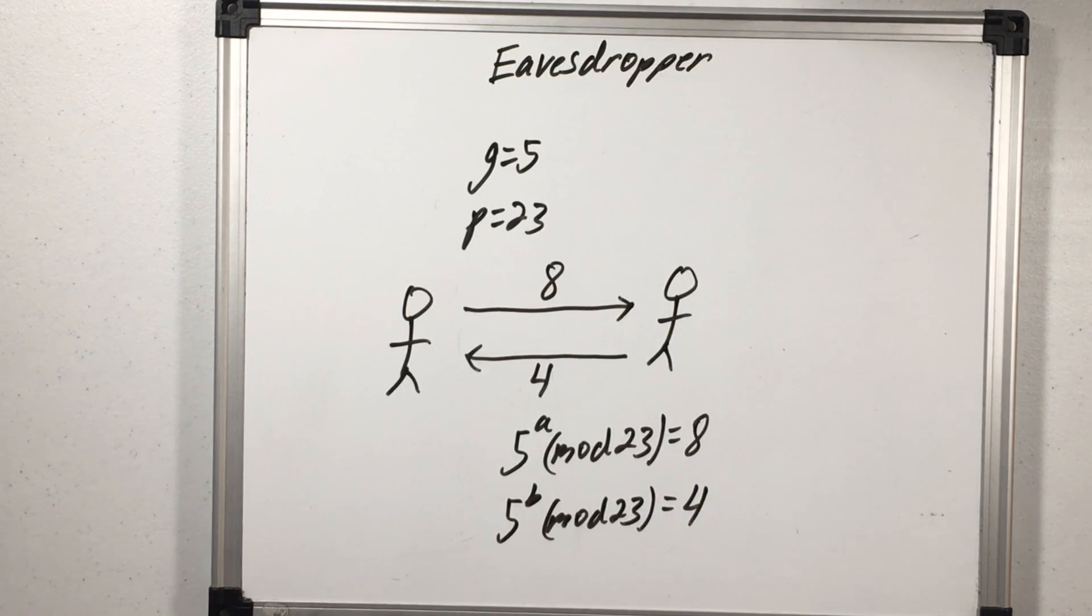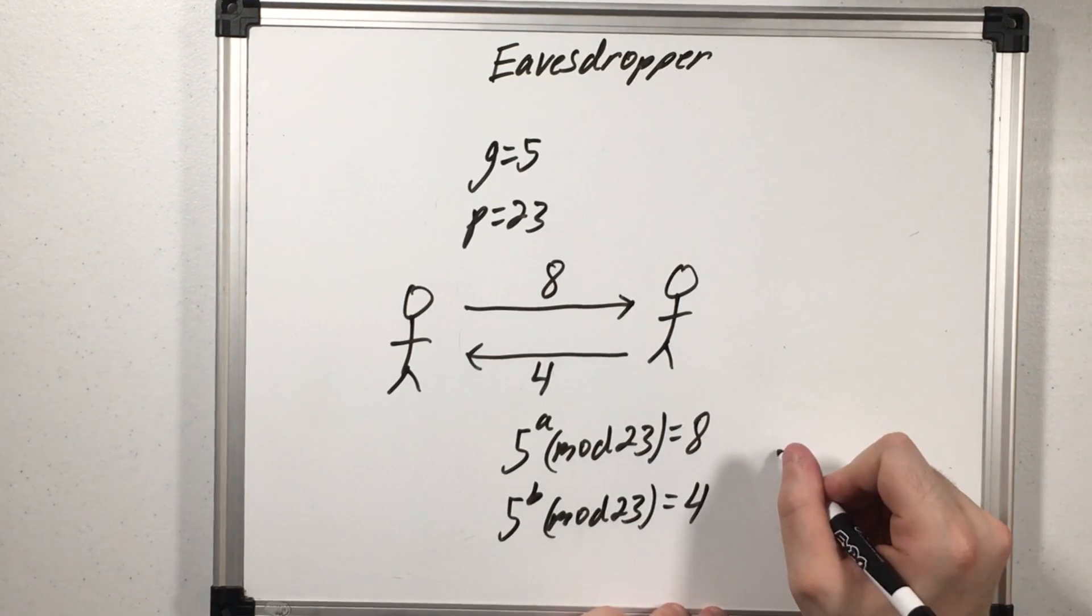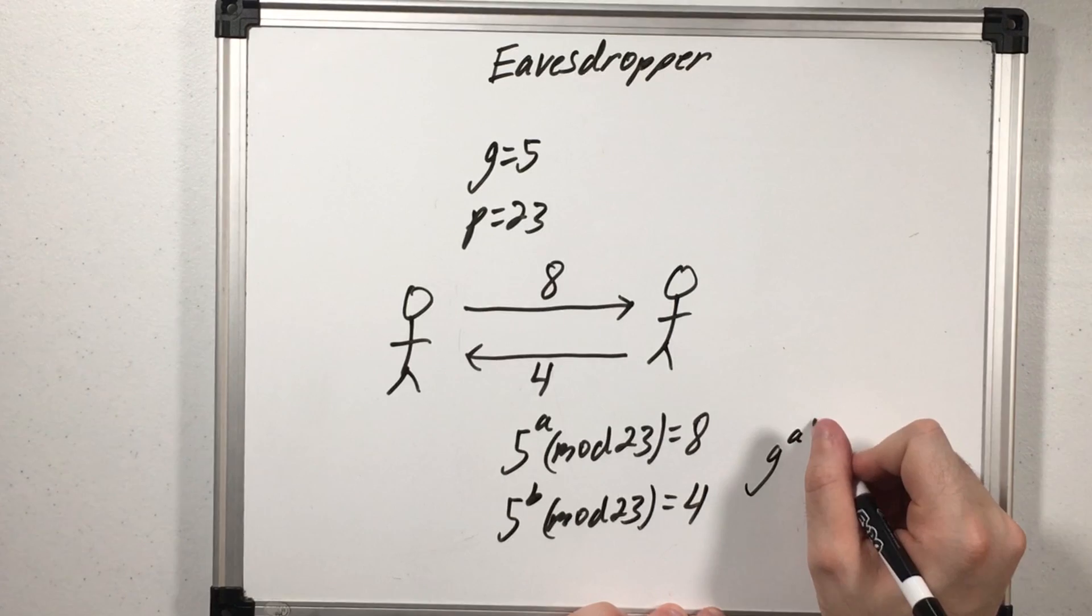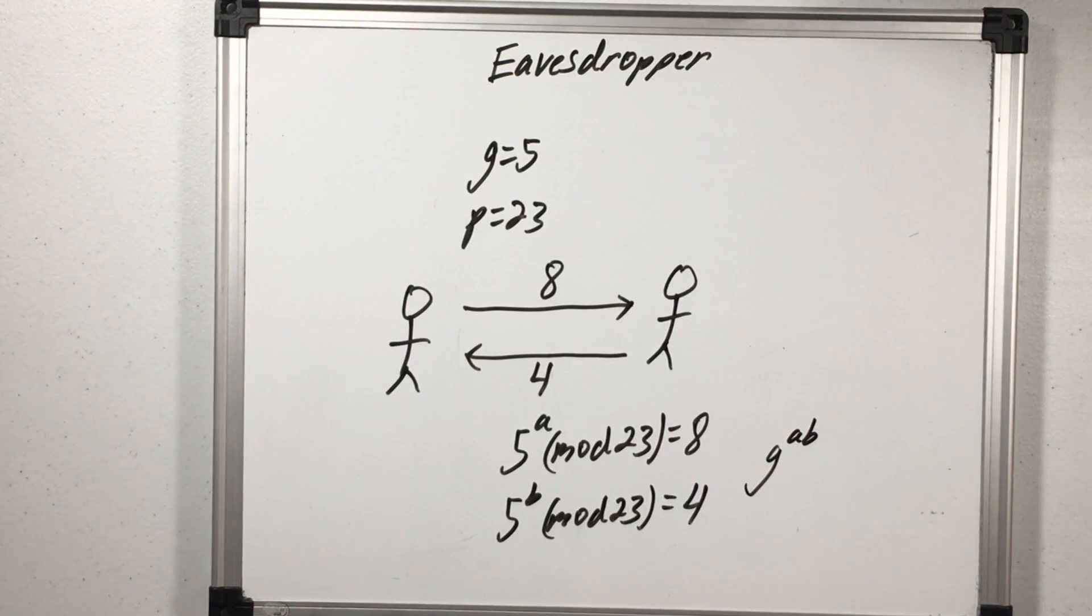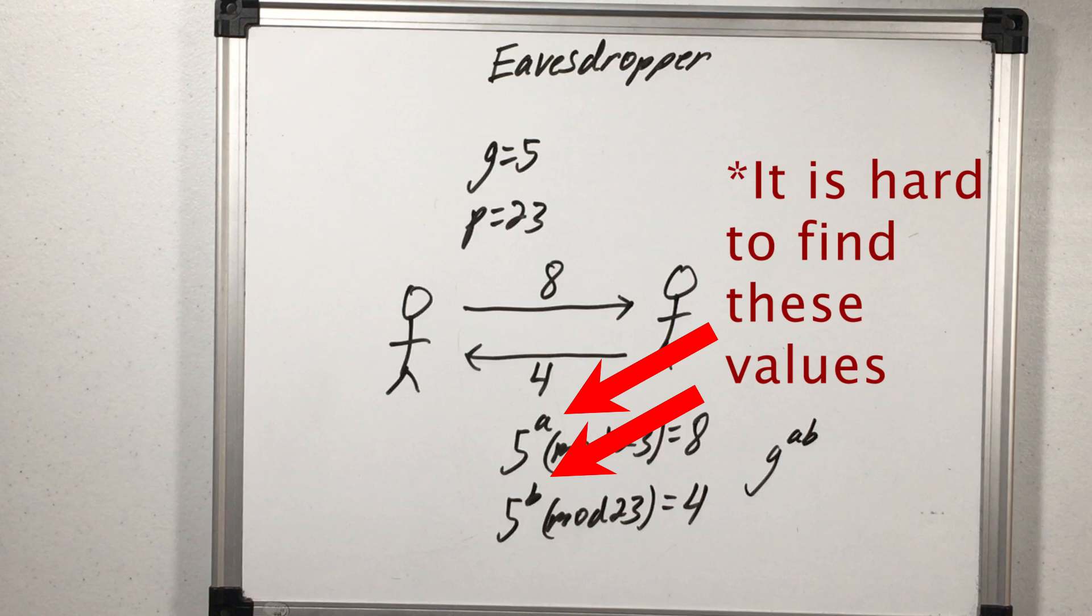Now since the eavesdropper knows how the algorithm works they know they need the value of G raised to the AB since this was in fact our secret key and this means that they either need the value of A or B. Either one works because once they have it they can then figure out what this entire value is and it turns out this is a hard problem to solve algorithmically. It's hard to efficiently find 5 to what power is congruent to 8 mod 23, especially if we had used bigger numbers.